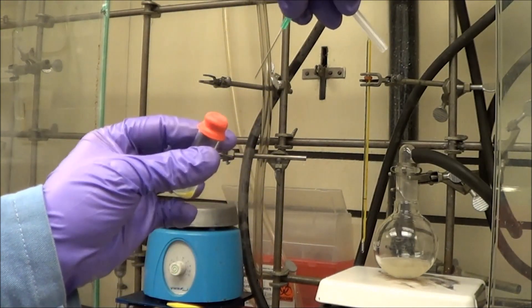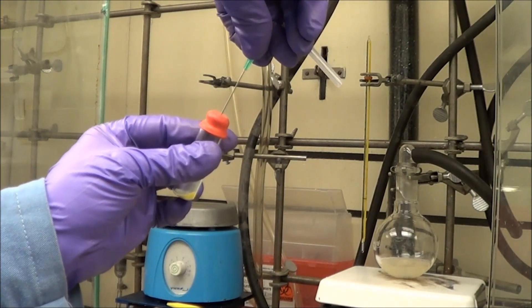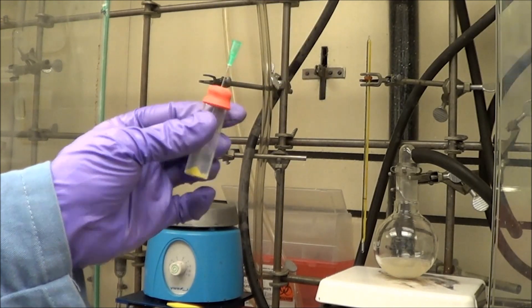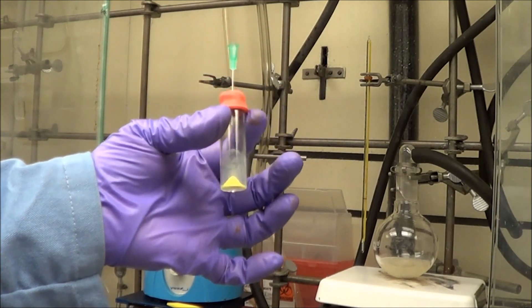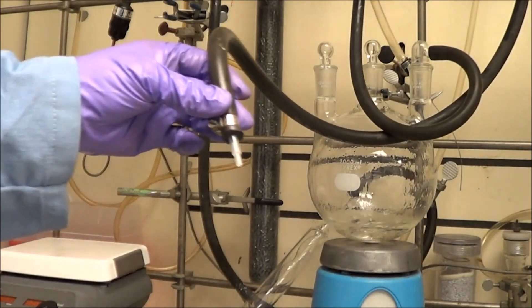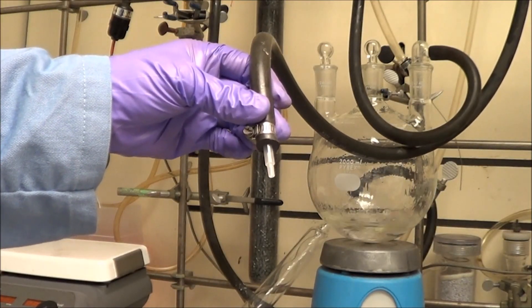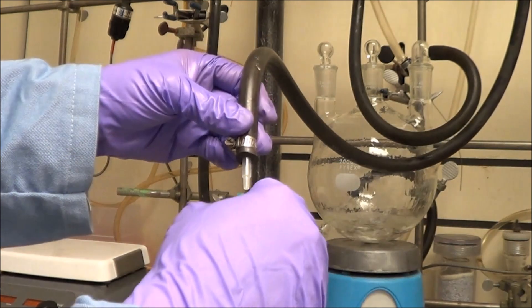I usually use small-gauge needles for this initial drying, and that's because this part is not problematic, but you really want to use a thin-gauge needle when you're pulling off the solvent, which comes next.